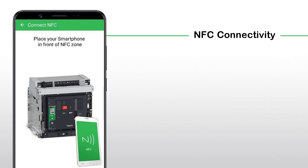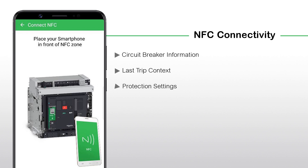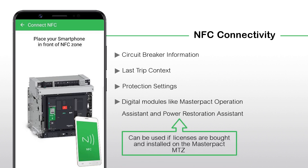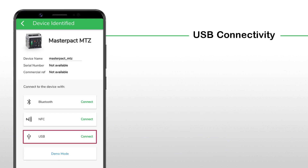The breaker data that can be viewed after connecting via NFC includes: circuit breaker information, last trip context, protection settings, and digital modules like MasterPACT Operation Assistant and Power Restoration Assistant. These can be used if the licenses are bought and installed on the MasterPACT MTZ.